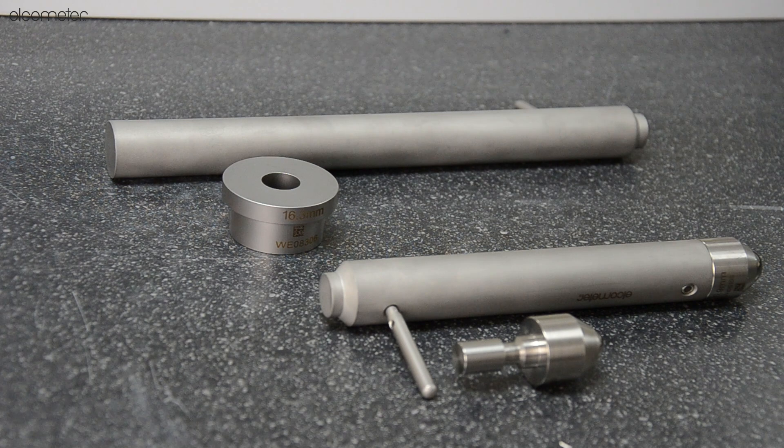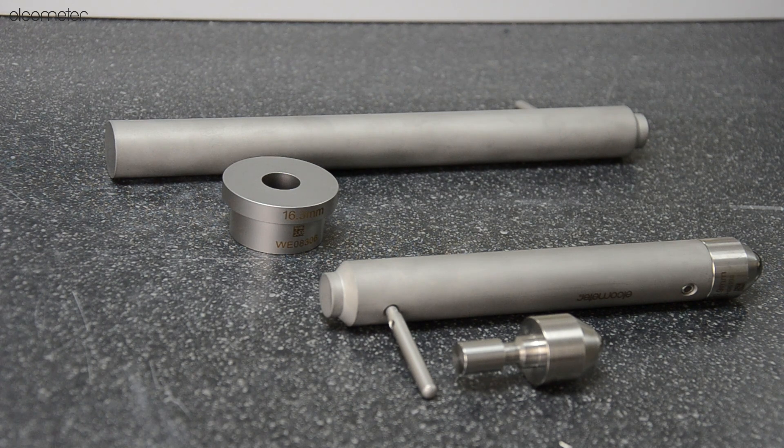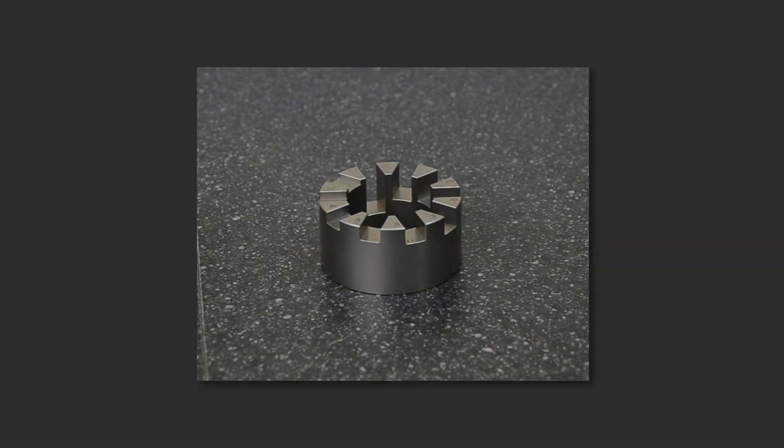Every kit is slightly different. Some contain, along with the other components previously mentioned, an adjustable stop collar to limit how far into the sample the punch or indenter travels, and a sample clamp.